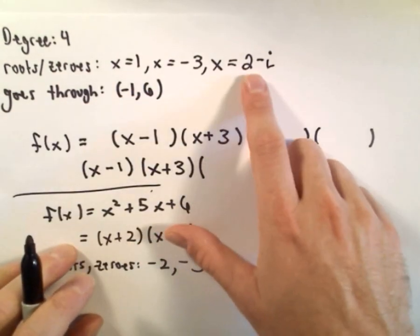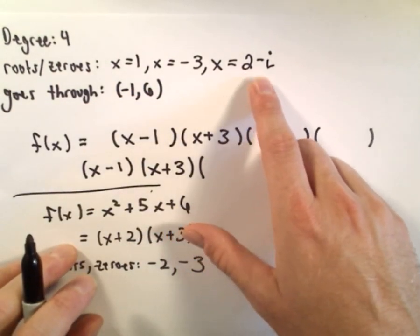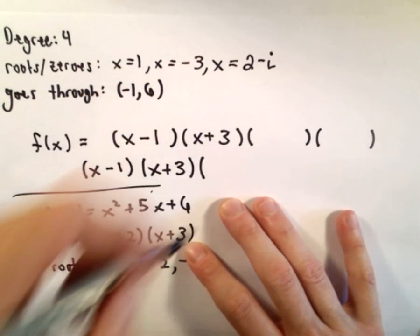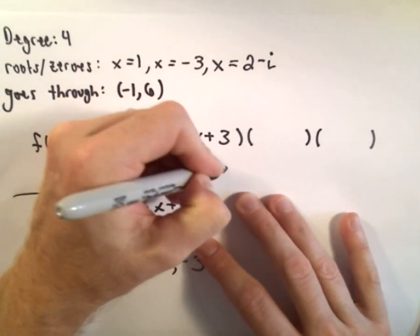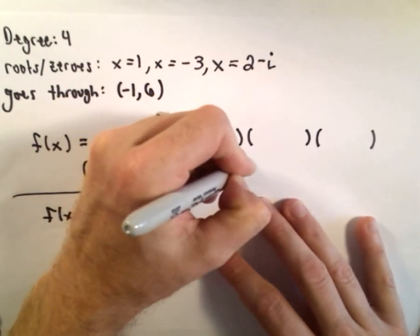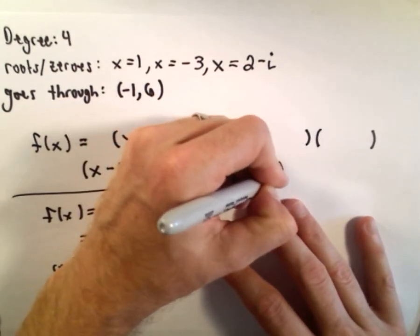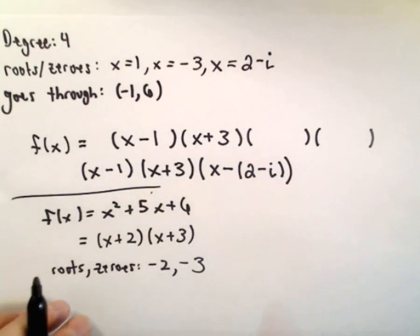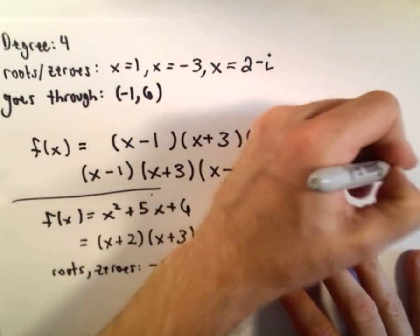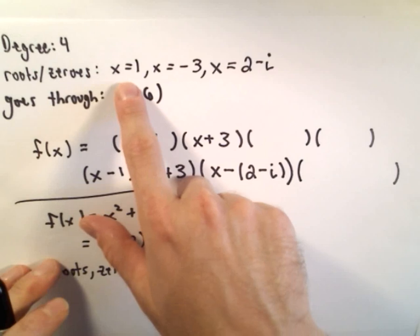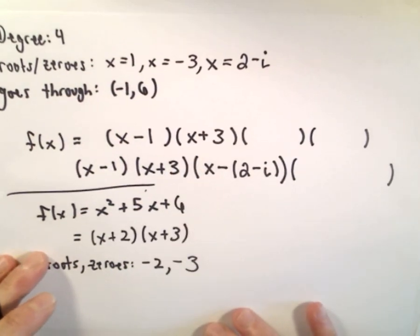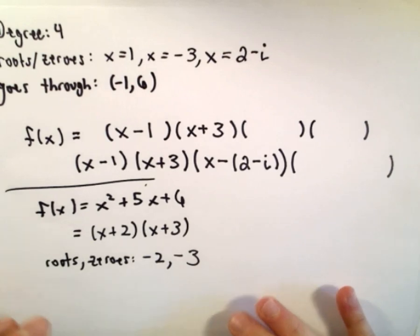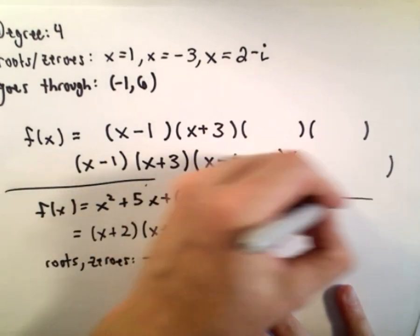We're told that x equals 2 minus i is a root. That means as a factor we're going to have x minus the quantity 2 minus i. So we've got one extra set of parentheses, and I'm only given three of the roots.